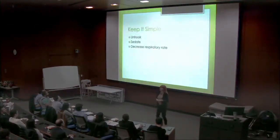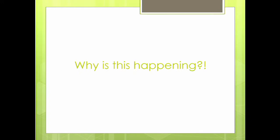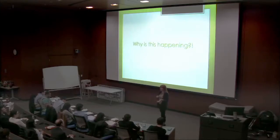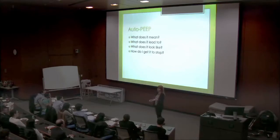I want to give you three simple steps so that you can save an asthma patient's life: number one, unhook; number two, sedate; and number three, decrease the rate. To understand why, we need to know what's going on. Luckily, with most asthma patients, all their problems are caused by one thing: auto-PEEP. What does that mean, what does it lead to, what does it look like, and most importantly, how do you get it to stop?